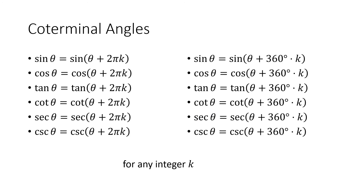In algebraic form: if you take an angle θ and add 2π times k — where k is any integer — the result is coterminal with θ, because 2π is one full rotation and k full rotations bring you back to the same terminal side. In degrees, the same idea says θ + 360°·k gives a coterminal angle. You can add or subtract any whole number of full revolutions and still have the same terminal side.